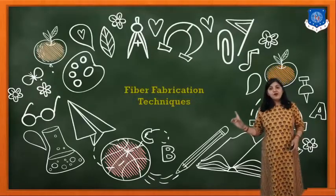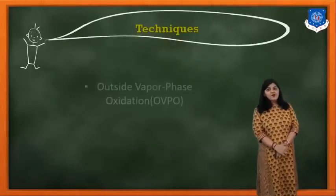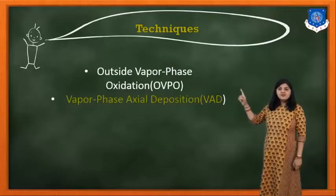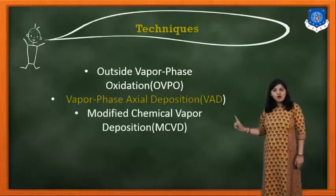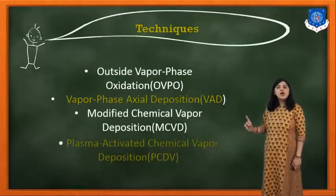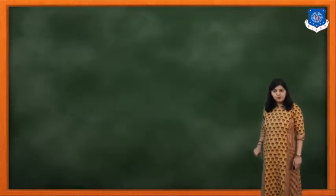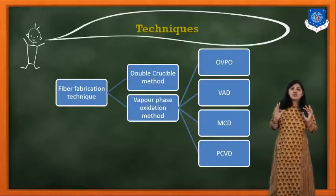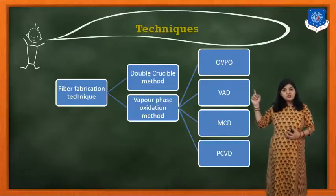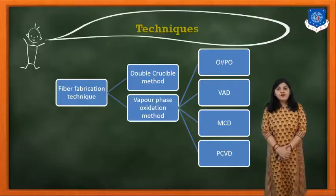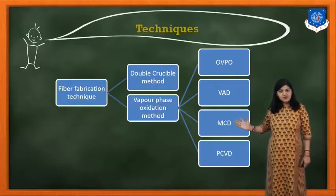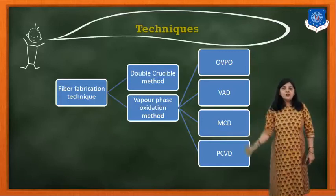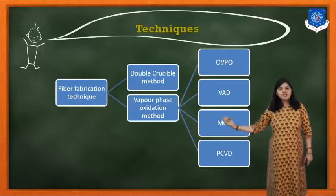Now, fiber fabrication techniques. The fiber fabrication techniques are: Outside Vapor Phase Oxidation (OVPO), Vapor Phase Axial Deposition (VAD), Modified Chemical Vapor Deposition (MCVD), and Plasma Activated Chemical Vapor Deposition (PCVD). All these fiber fabrication techniques are classified into two categories: the double crucible method and the vapor phase oxidation method. OVPO, VAD, MCVD, and PCVD all fall under the vapor phase oxidation method.